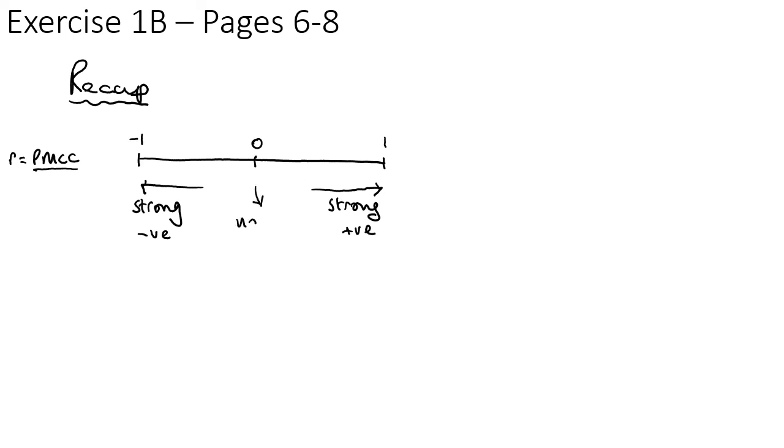So you should now be able to do exercise 1B on pages 6 to 8 of the textbooks. And we'll just do a quick recap here. So we can use our calculator to calculate this value of R, which will be between 1 and negative 1, like this. And R we use to represent this thing called the PMCC, the product moment correlation coefficient. As we move towards the edges, it will tell us about the strength of the correlation. So we get here be like strong negative correlation, here strong positive, and middle here, close to the middle basically means no correlation.